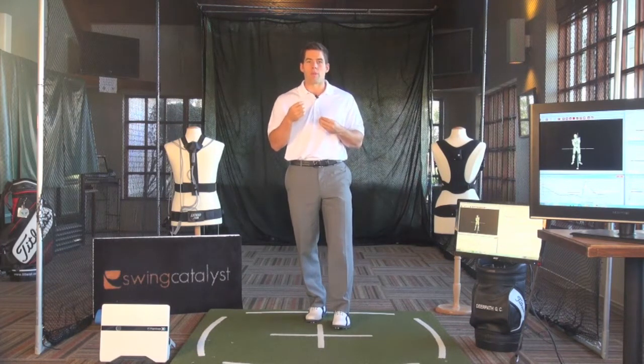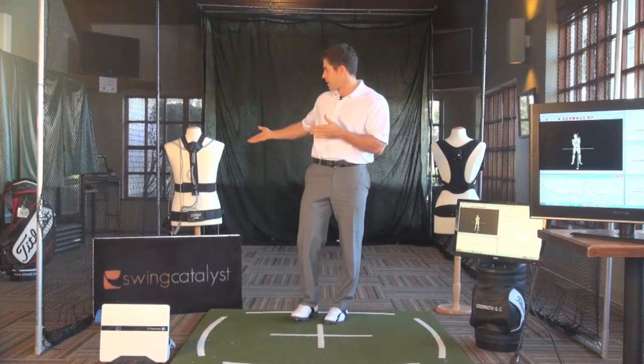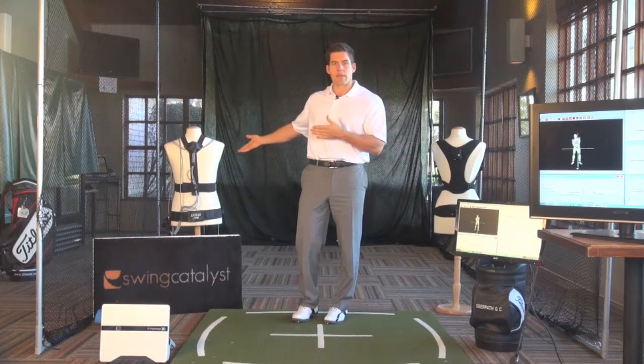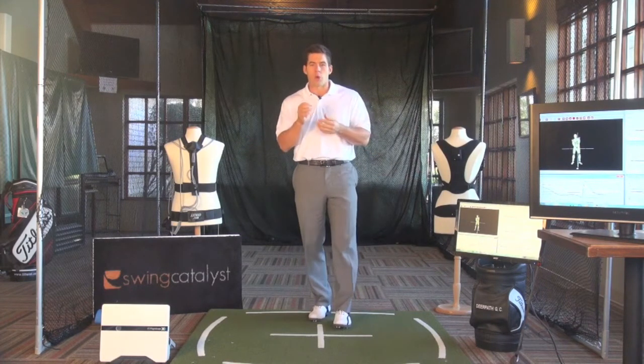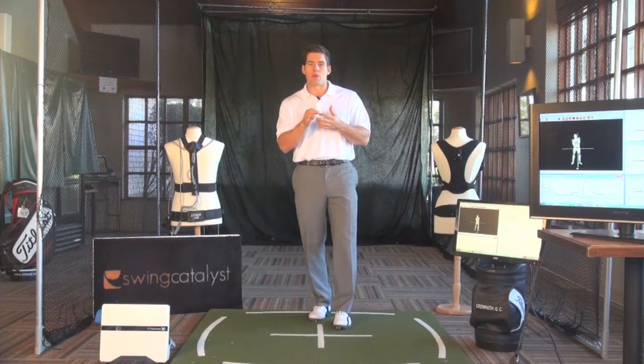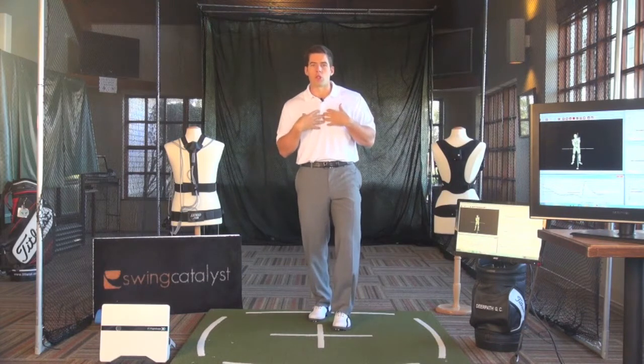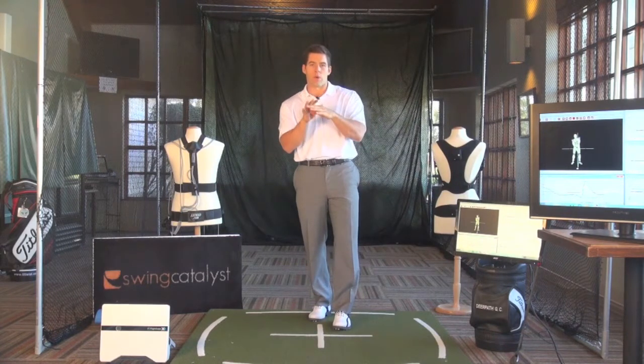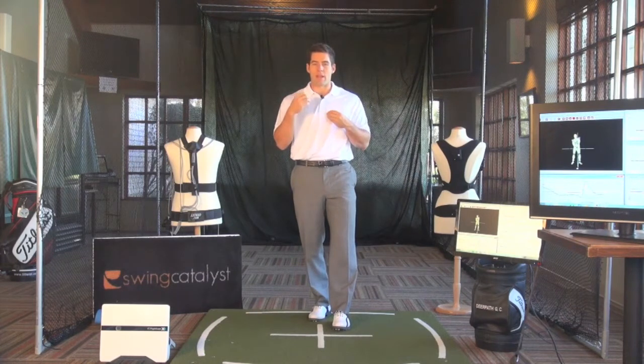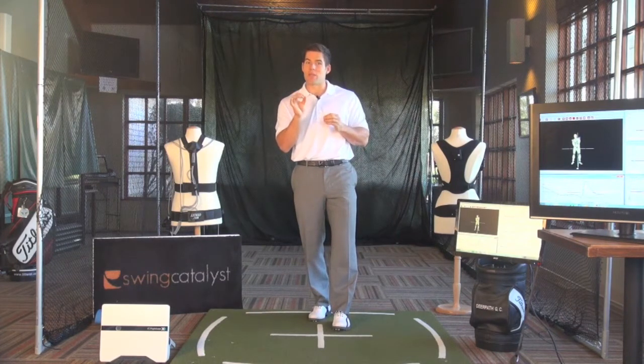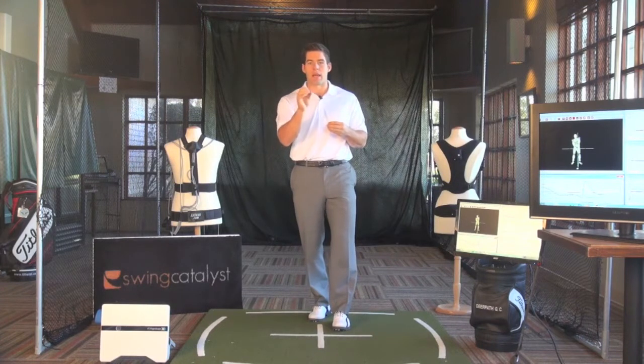So we're going to talk about in detail through the use of data points collected by pieces of technology that I use on a daily basis like the 8 sensor AMM motion capture. We're going to talk about commonalities that those players have, very distinct interactions between their torso, their lead arm and their wrists. These are traits that the best players in the world have and I'm going to explain to you today in detail how you can take some of those concepts and apply them into your game.